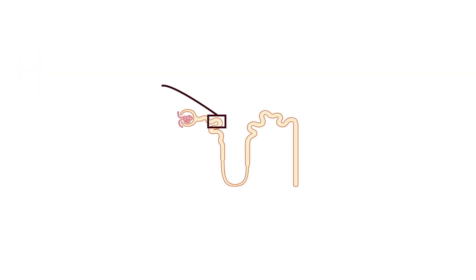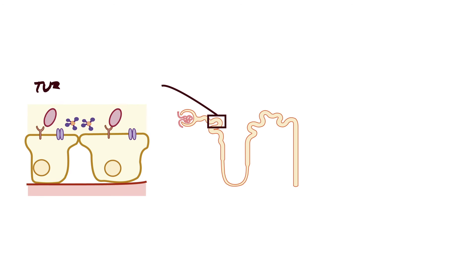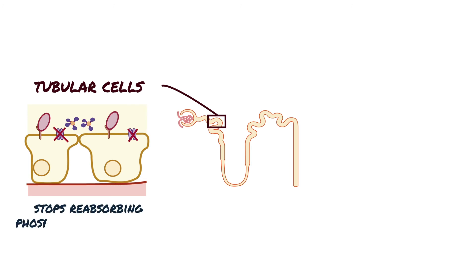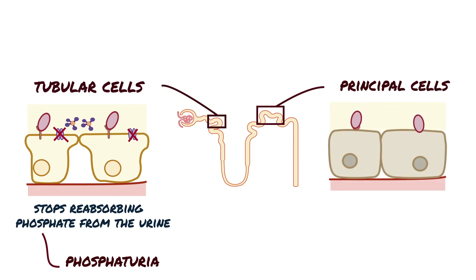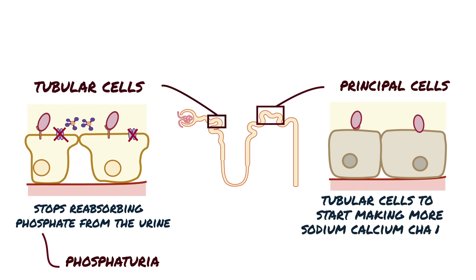In the blood, phosphate binds to calcium and forms complex calcium, which can't be used in cellular processes. To stop this, a second action of parathyroid hormone is to bind to receptors on the tubular cells of the kidney's proximal convoluted tubules. This stops the sodium-phosphate co-transporters on the apical surface from reabsorbing phosphate from the urine, so phosphate is lost in the urine — a process called phosphaturia. Parathyroid hormone also binds to principal cells of the distal convoluted tubules, causing more sodium-calcium channels to be made and embedded on the apical surface, increasing reabsorption of calcium from urine.